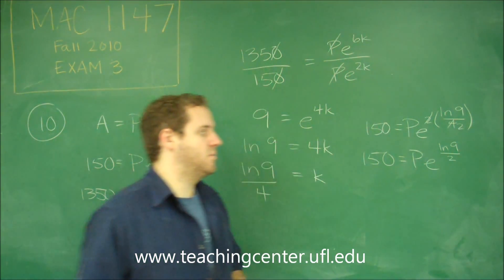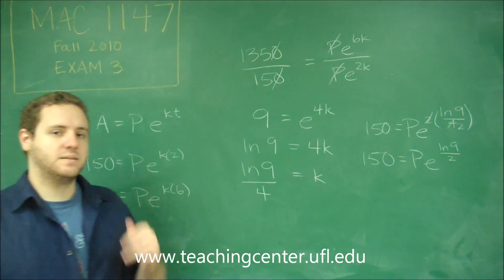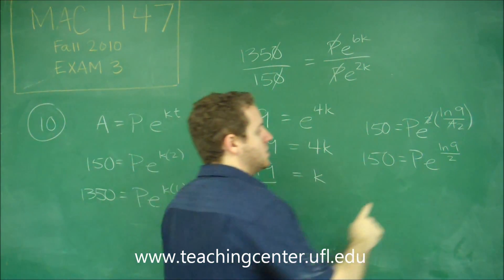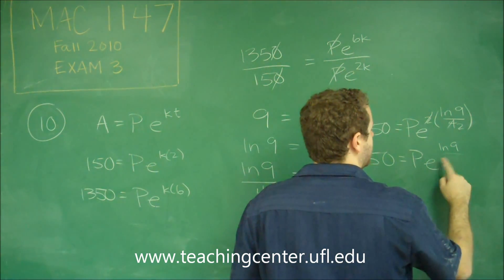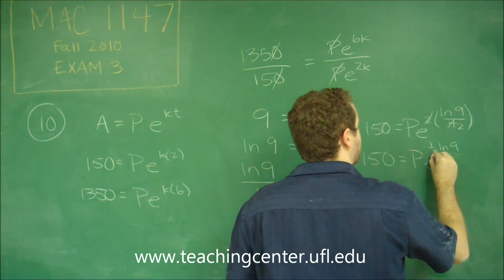Now, what you want to do here is remember that the E to the ln cancels out if you just have ln of something. So what we want to do is, instead of divide by 2, think of this as 1 half.